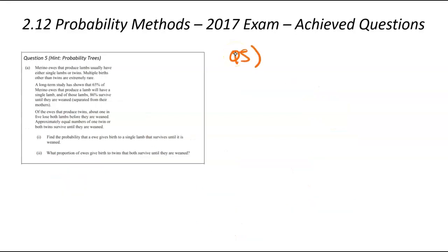Okay, we are now looking at question number five. Number five, giving us a hint, it relates to probability trees. We've got merino ewe. If you didn't know, a ewe is like a baby lamb or a sheep. They produce these lambs, and at birth, you can have a single lamb or twins. We can see single or twin.